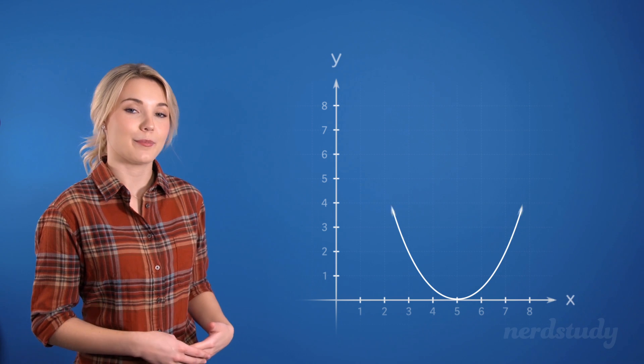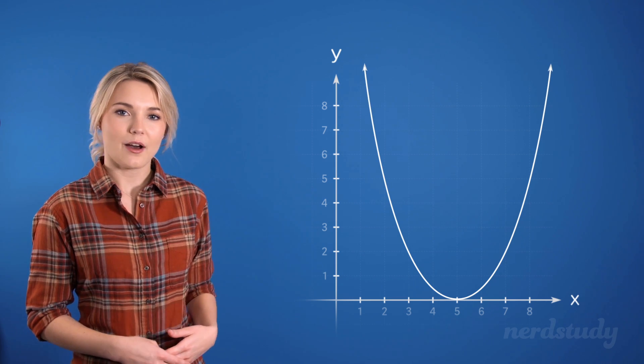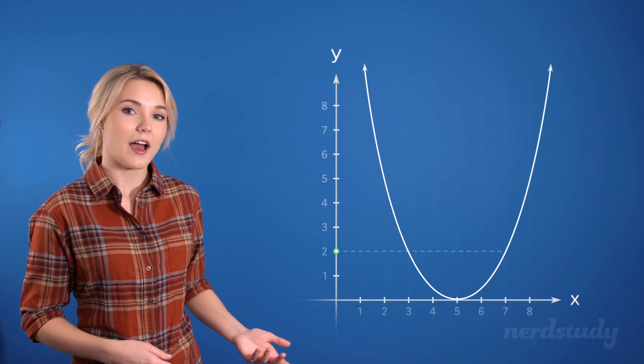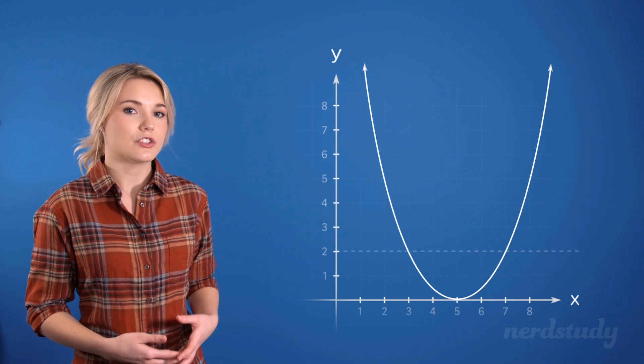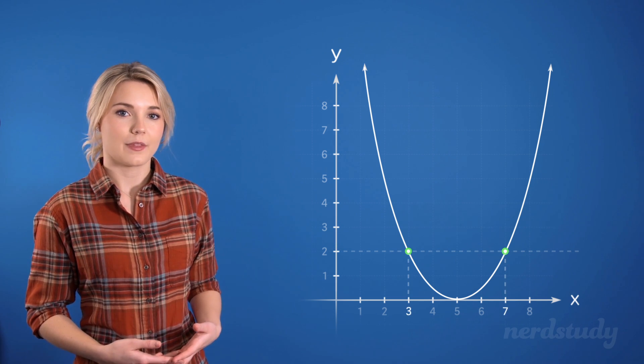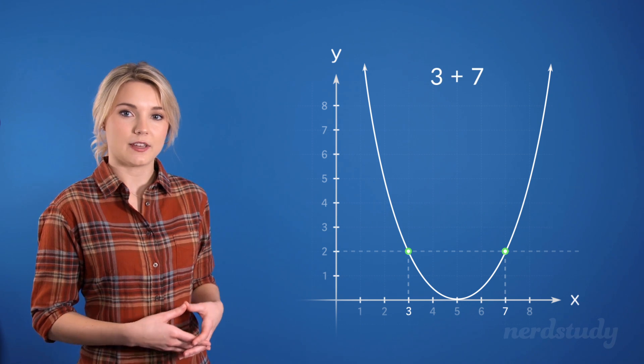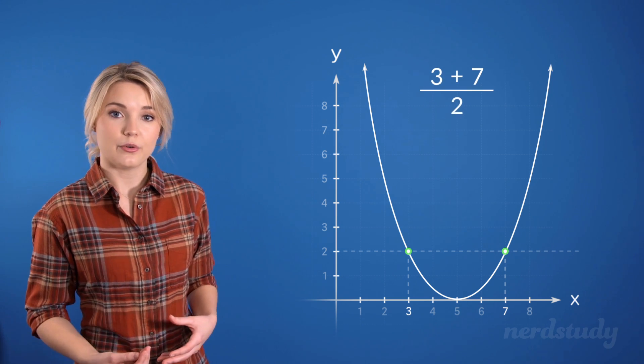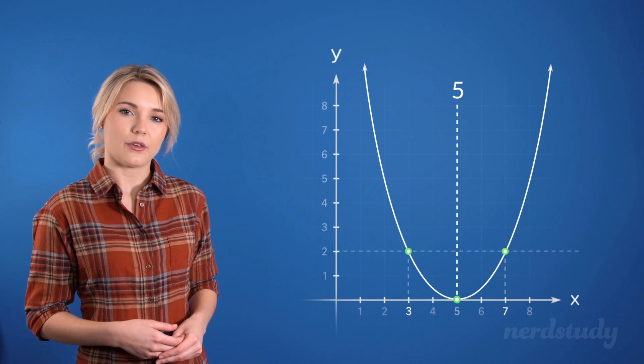So here's a rough sketch of a parabola. Notice how, if we take a look at this particular y value, we'd see that it hits two points on this parabola. Now if we add the two x values for these points together, and then divide it by 2, we'd have the vertex's x value, wouldn't we?